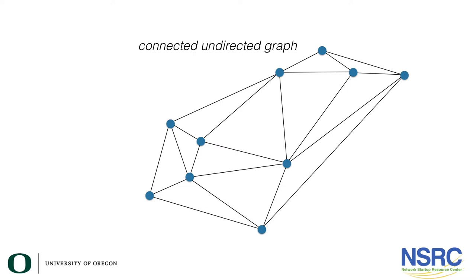Additionally, for networking it might be useful to have numbers on each of these lines to tell you what happens when you use that line to connect between these two nodes. It could be how long it takes or how far you must go. This creates what we call a weighted connected undirected graph because you have some sort of value that tells you what happens when you use that edge.